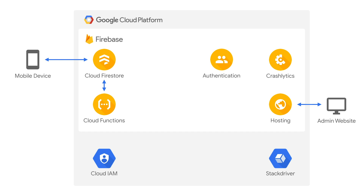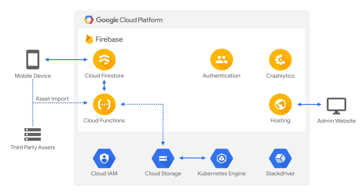We did that through a combination of Firebase functions and GKE. Rather than doing any computationally expensive processing on the mobile device, we ship assets to the cloud, run them through a cloud processor in GKE, and then ship them back into functions where we update Firestore. That lets the mobile device know that everything is ready.